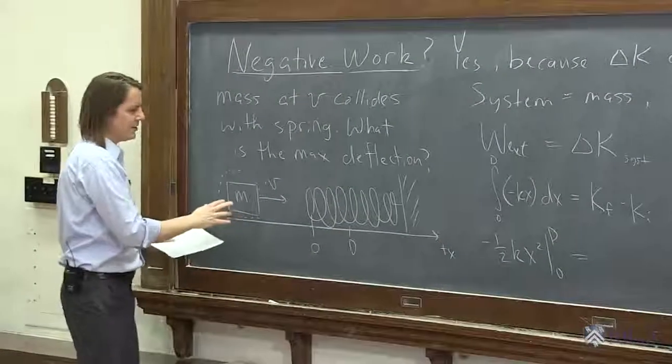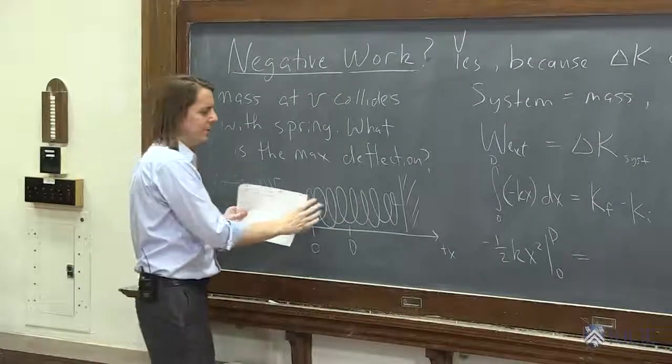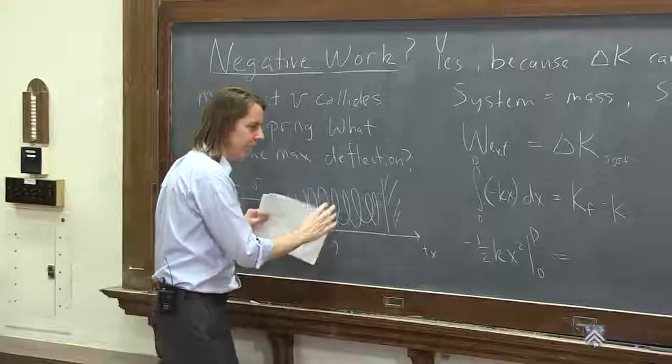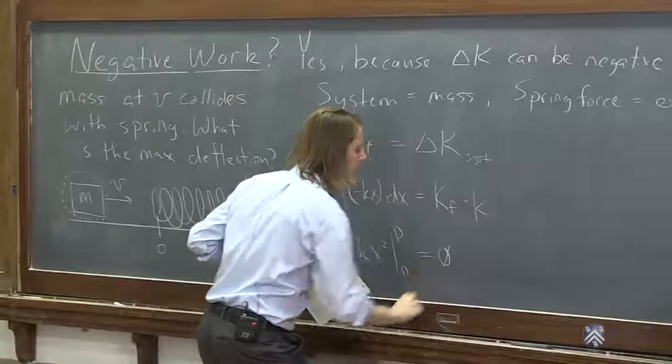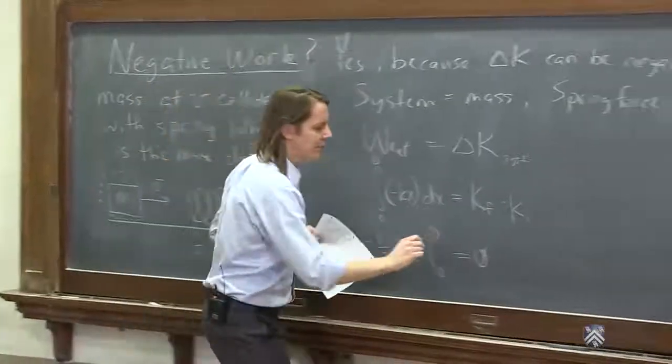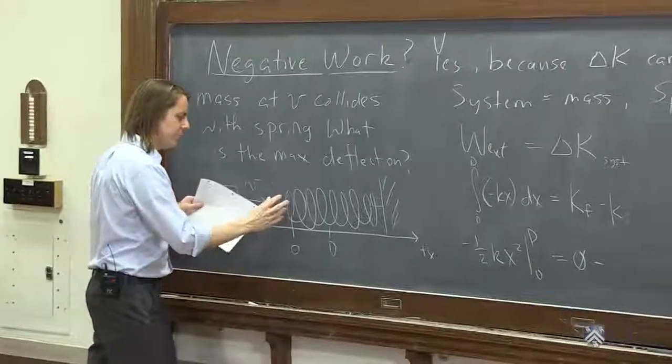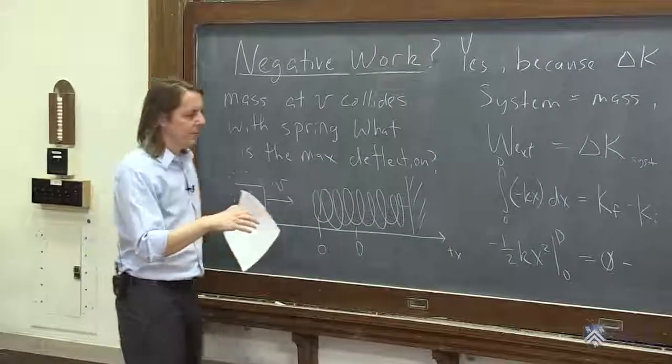And this is, let's think about it. It started out, the final kinetic energy is zero. We're figuring out how far it deflects before it stops. So that's zero. And then minus the initial kinetic energy is what it had when it first hit the spring. And that's just one-half mv squared.